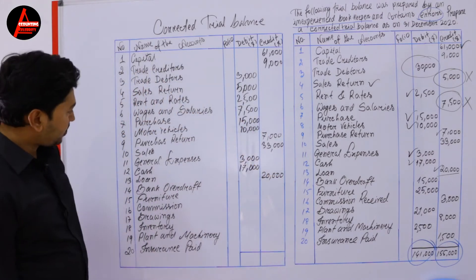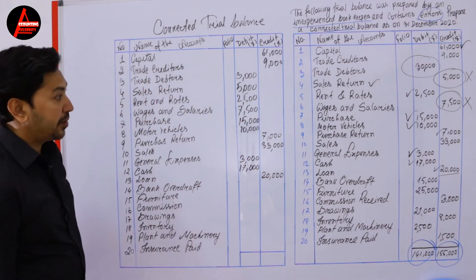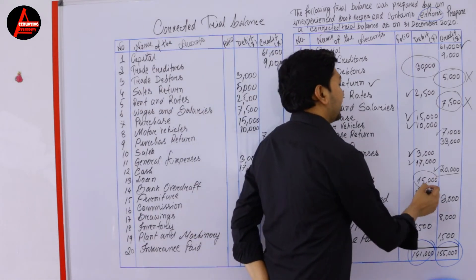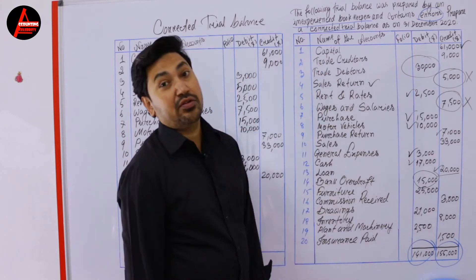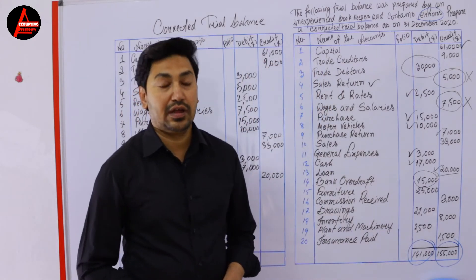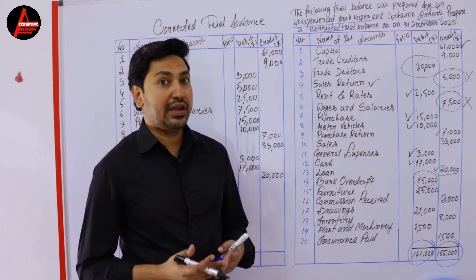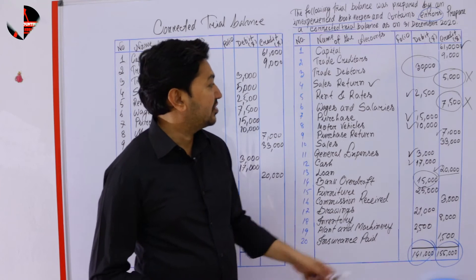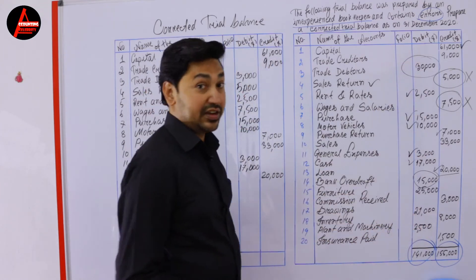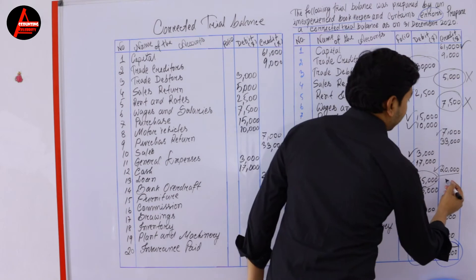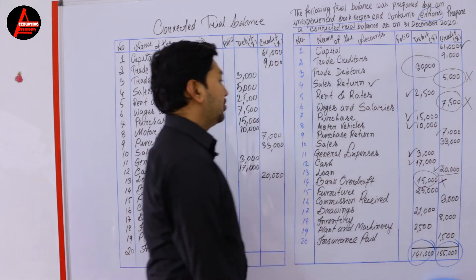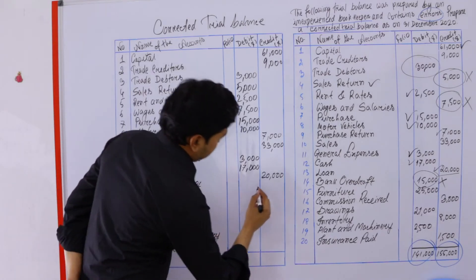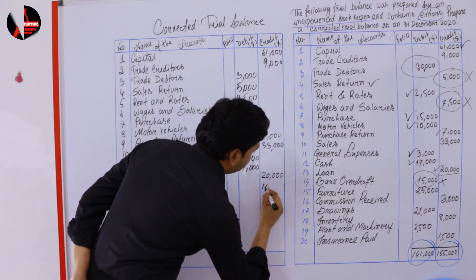Next is bank overdraft. What is bank overdraft? Bank overdraft is a liability, and liability is credit. But what is written here? It is written on the debit side — so this is not correct, you made a mistake here as well. It should be credited: 15,000 dollars. This was a mistake and we need to correct it.